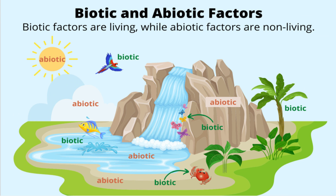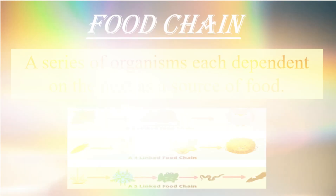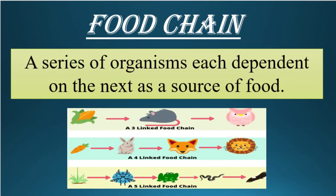Do you know how biotic and abiotic components depend on each other? Let's take the example of a plant. A plant is a biotic component, and for the growth of a plant you need air, water, and soil — all of which are abiotic components. In the presence of these abiotic components, plants grow, and this plant is then eaten by other living organisms to get energy. This shows that biotic components depend upon abiotic components. Plants are essential to the ecosystem because they produce food which is eaten by all other organisms.